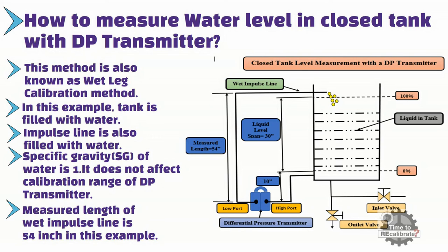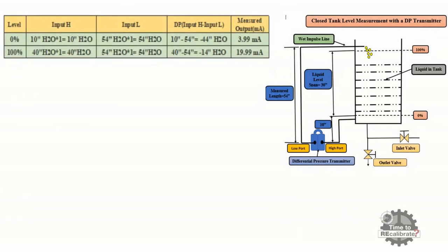As you can see from the table, at zero percent level, the DP transmitter high side has 10 inches H2O pressure, multiplied by the specific gravity of water which is 1, giving 10 inches H2O on the high side. Similarly, at zero percent level, water in the wet impulse line puts 54 inches H2O pressure on the low port, multiplied by the specific gravity of water, giving 54 inches H2O on the low side. Differential pressure is high side minus low side: 10 minus 54 equals minus 44. Hence, differential pressure is minus 44 inches H2O at zero percent level.